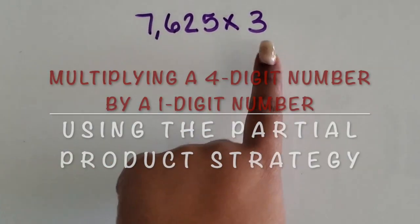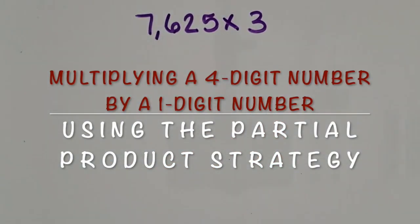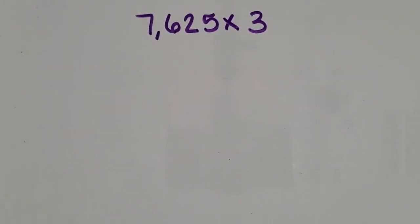We're going to multiply a four-digit number by a one-digit number using the partial product strategy, showing students that they can do this strategy with any multi-digit number. It helps them to be more comfortable and flexible with their multiplication strategies, knowing that it is the same as what they did with the two-digit by one or the three-digit by one. We're just adding on one more place value.